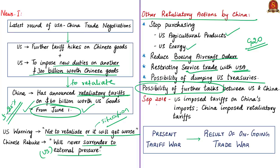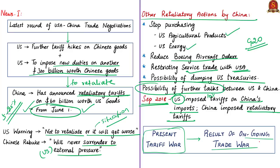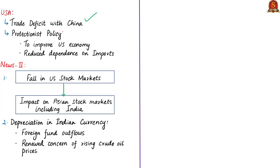In September 2018, the U.S. imposed 10% tariffs on 200 billion U.S. dollars worth of Chinese imports, and China immediately imposed retaliatory tariffs on 5,000 categories of U.S. products with tariffs ranging from 5% to 10%. The present event is the result of this ongoing trade war. The United States has a trade deficit with China, and is imposing large tariffs to pursue a protectionist policy, aiming to boost the U.S. economy and reduce the necessity of imports from China.